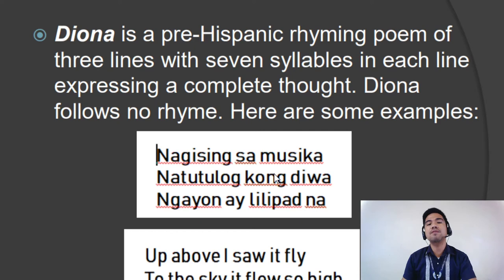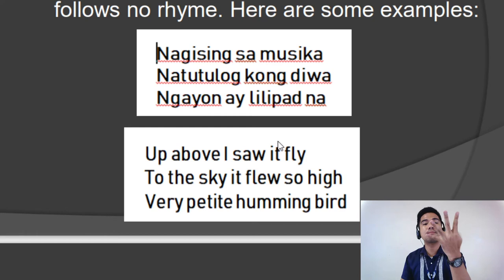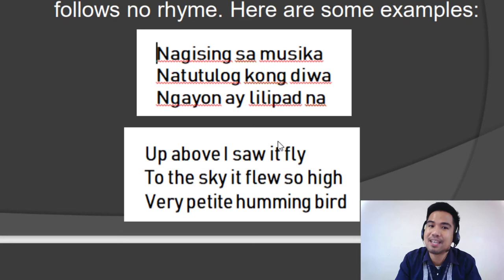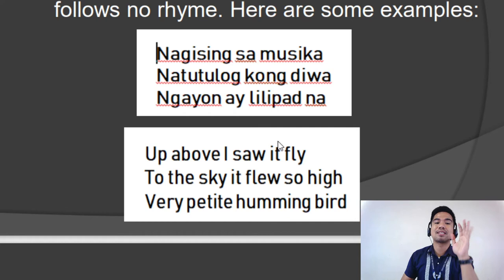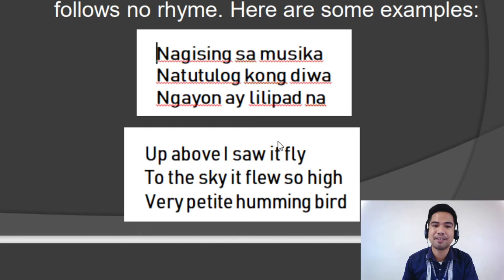I have examples as well — a Filipino example and an English example. I made these myself to show that you can also do it. 'Nagising sa musika, natutulog kong diwa, ngayon ay lilipad na.' That's seven, seven, seven. For the English example: 'Up above, I saw it fly. To the sky, it flew so high. Very petite hummingbird.' That's seven, seven, seven. See the difference between Tanaga and Dayona? They differ in the number of lines in a stanza. Tanaga follows particular rhyme patterns, while Dayona does not follow a pattern.